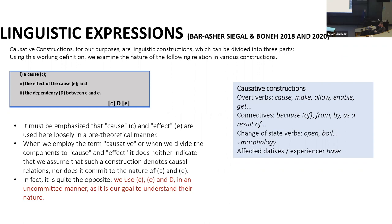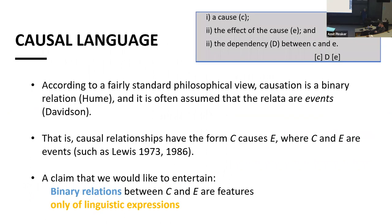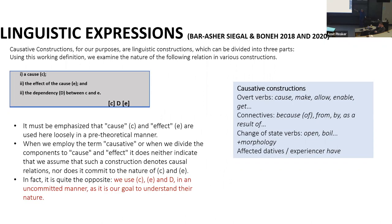To summarize: we said the binary relation is a linguistic phenomenon. Now the next step is to go back and ask what causation itself is, or what we are trying to capture by this notion of 'cause.' Let's go back to the classics and clarify what I mean when I say that causation is not a binary relation.